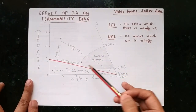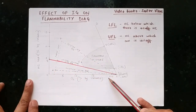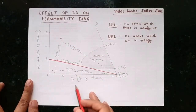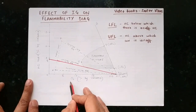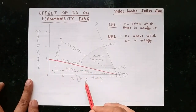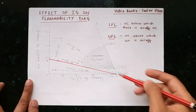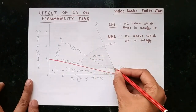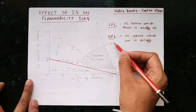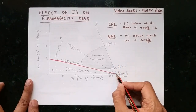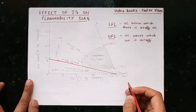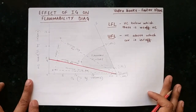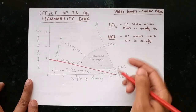I will introduce you to all the basic things in this diagram. The y-axis represents hydrocarbon gas percentage by volume, and the x-axis represents percentage by volume of oxygen. There is one sloping line A-B, and here is your flammable mixture region. This is the lower flammable limit, this is the upper flammable limit, and here is point A which represents pure air.